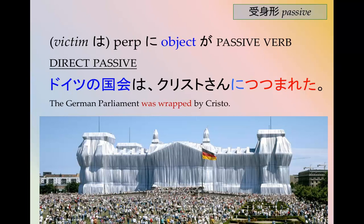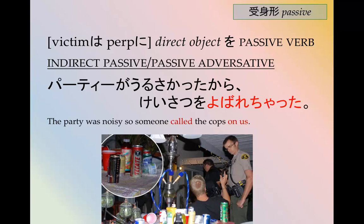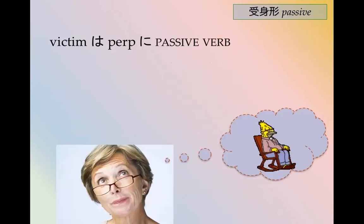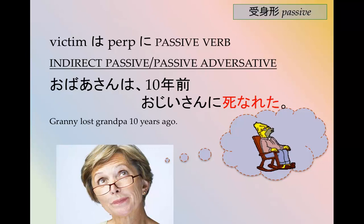The German parliament was wrapped by Christo — Christo is an artist who actually wrapped the entire German parliament. The indirect passive: パーティーがうるさかったから警察を呼ばれちゃった. The party was noisy, so someone called the cops on us — the cops were called. It doesn't say by whom. It didn't happen to me directly, but it affected me negatively — that's why it's an indirect passive. Often used when someone dies: おばあさんはじゅうねんまえおじいさんに死なれた — Granny lost grandpa ten years ago, he died on her.